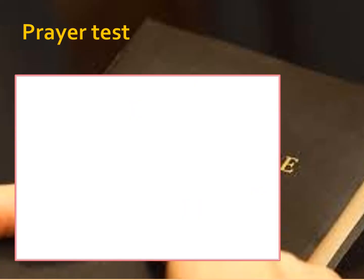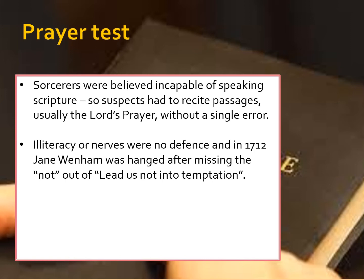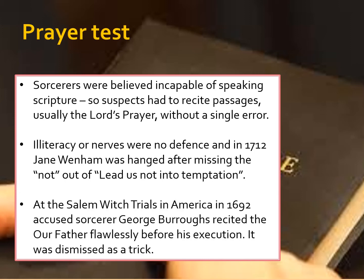Another way to test for witches was the prayer test. Sorcerers were believed to be incapable of speaking scripture, so suspects had to recite passages — usually the Lord's Prayer — without a single error. Any illiteracy or nerves were no defence. In 1712, Jane Wenham was hanged after missing the word 'not' out of 'lead us not into temptation.' At the Salem witch trials in 1692, George Burroughs recited the Lord's Prayer flawlessly but was still executed because the judge deemed it suspicious that he could do it so perfectly. So even if you said the prayer correctly, you could still be sentenced to death.